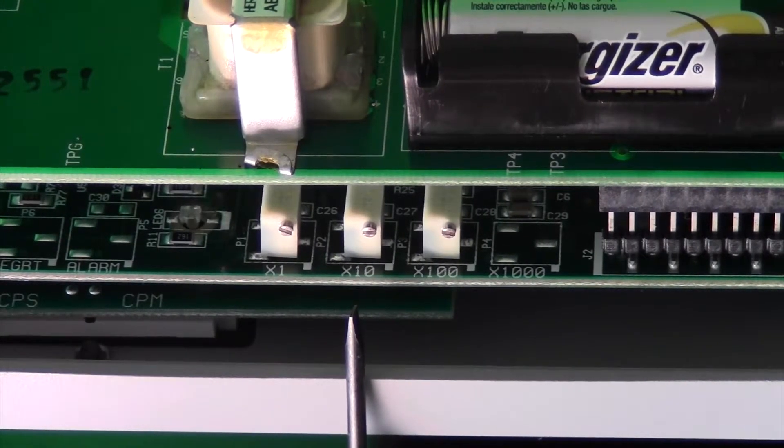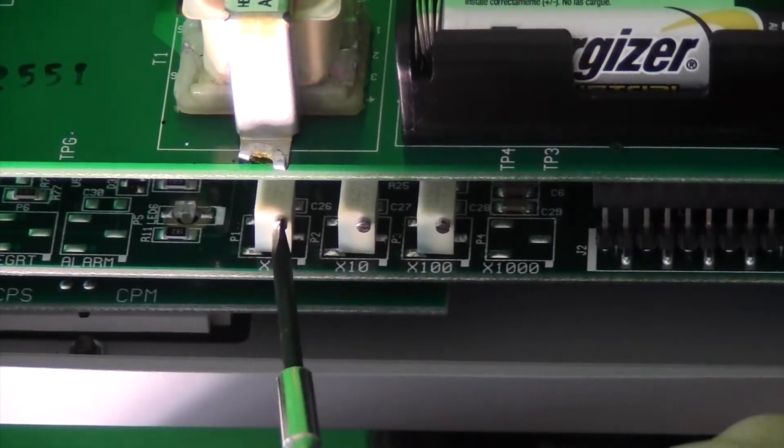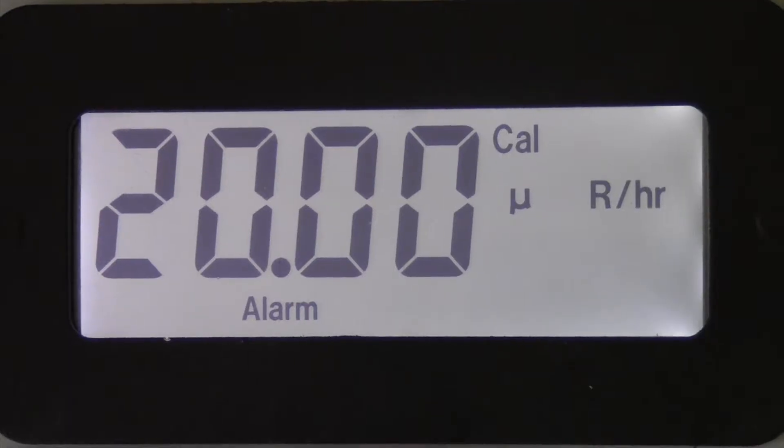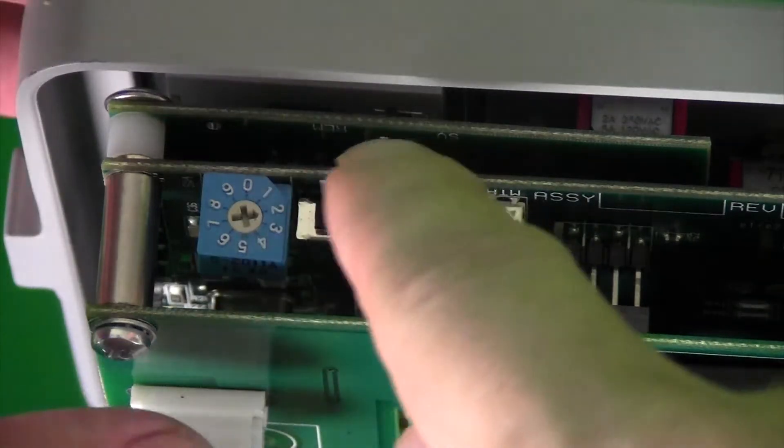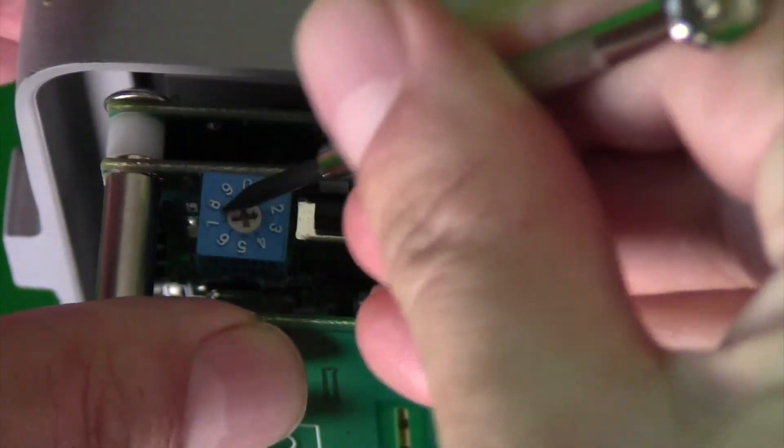Set with a screwdriver to desired set alarm rate. This time, it's 20 microroentgen per hour. Press the black button SW5 again. Turn the blue switch SW4 back to zero.